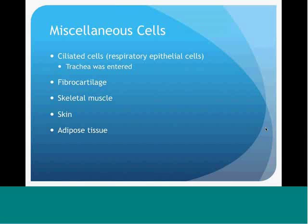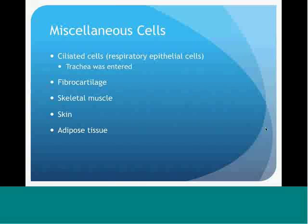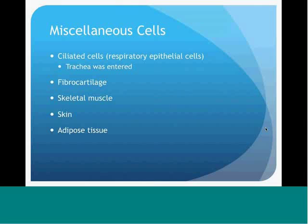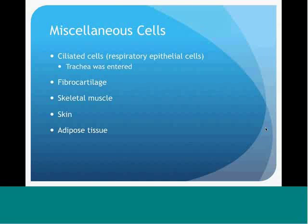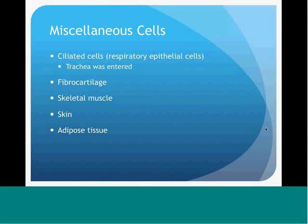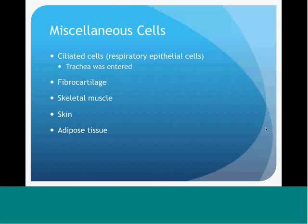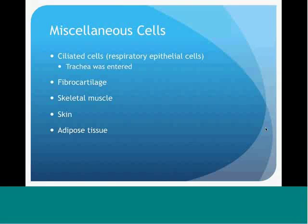Other things you can see on an FNA slide of the thyroid are ciliated cells, which are respiratory epithelial cells—meaning you accidentally entered the trachea. Clinically, if you enter the trachea during the aspiration biopsy, the patient will likely be coughing. You can also see fibrocartilage if you pass through certain areas of the neck. You can see skeletal muscle—the sternocleidomastoid is sometimes between the needle and the thyroid and is painful for patients when traversed. You may also see adipose tissue on the slide.